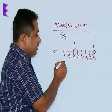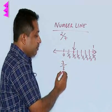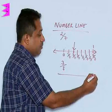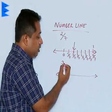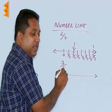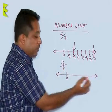Similarly, if suppose the question is plot 3 by 8. Again we have considered a positive number. A positive number will again lie on the right side of 0. We are going to divide this into 8 equal parts. Look at the denominator is 8. We are going to divide into 8 equal parts.